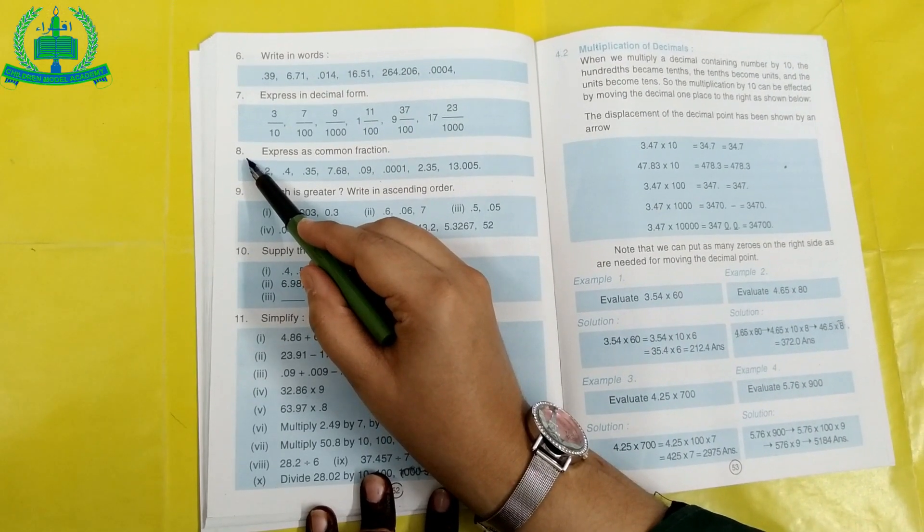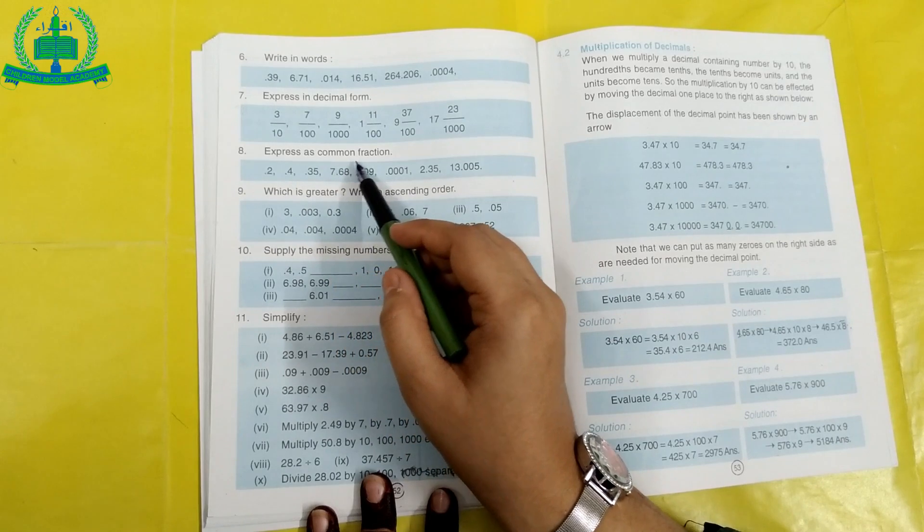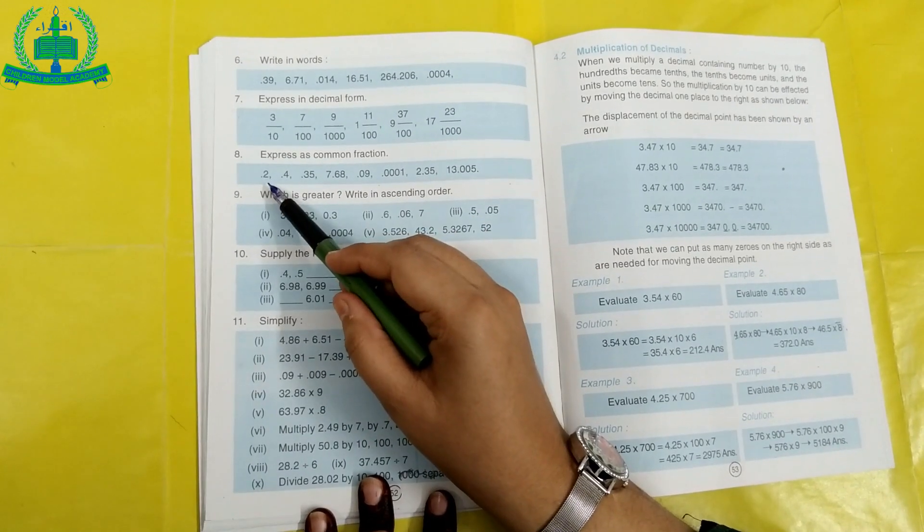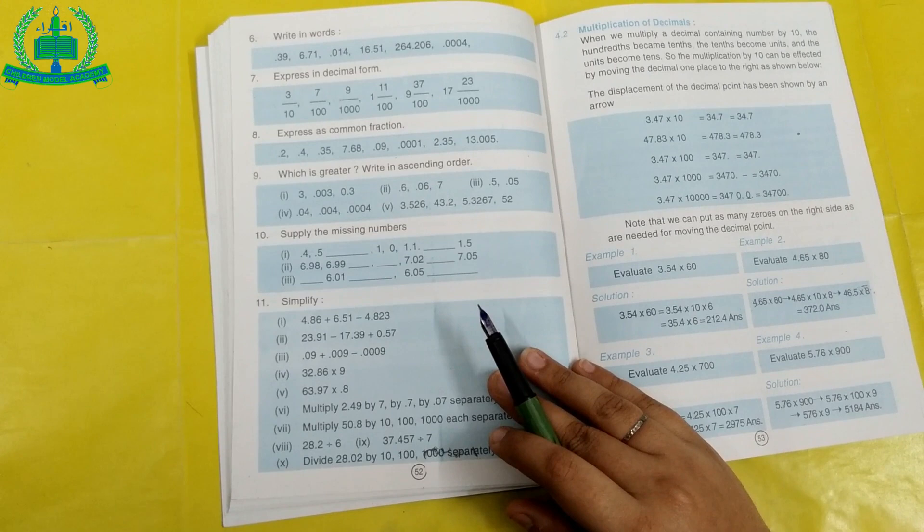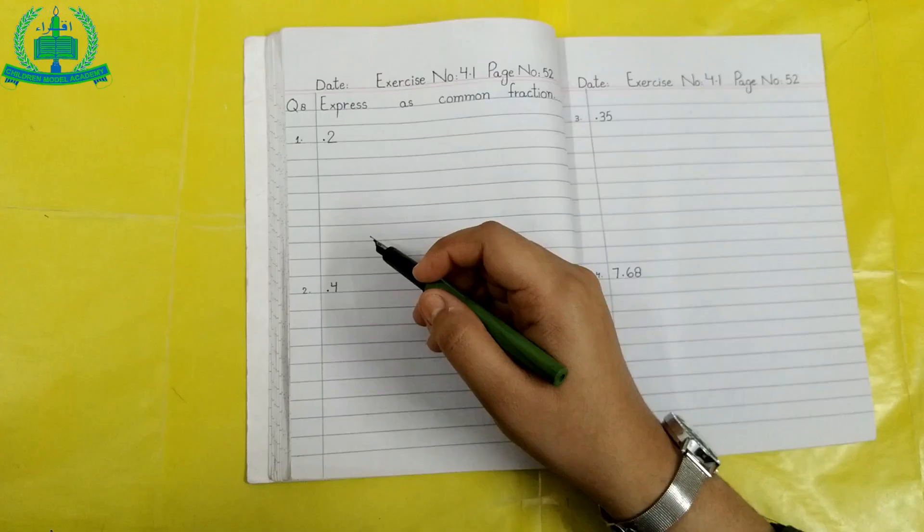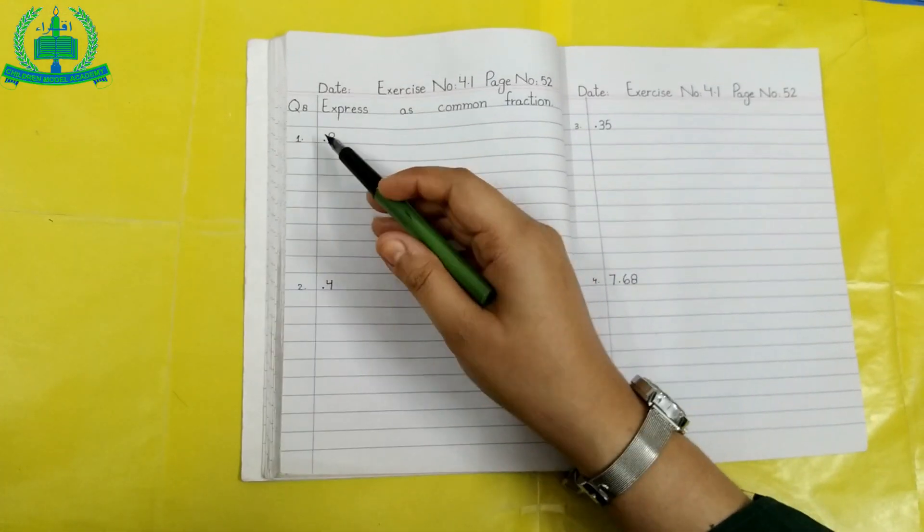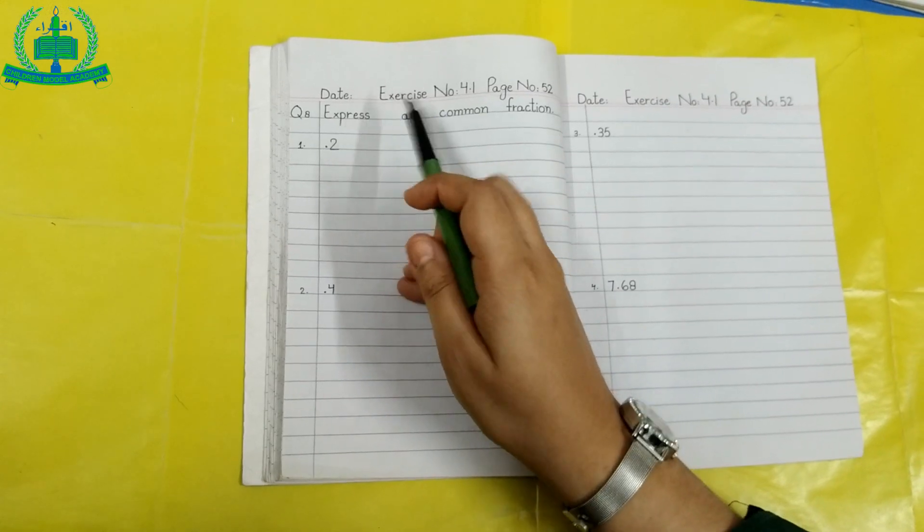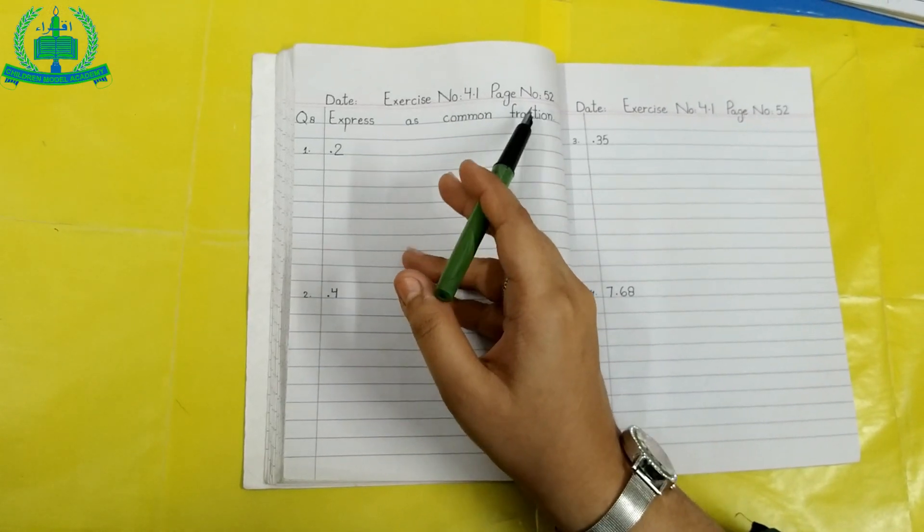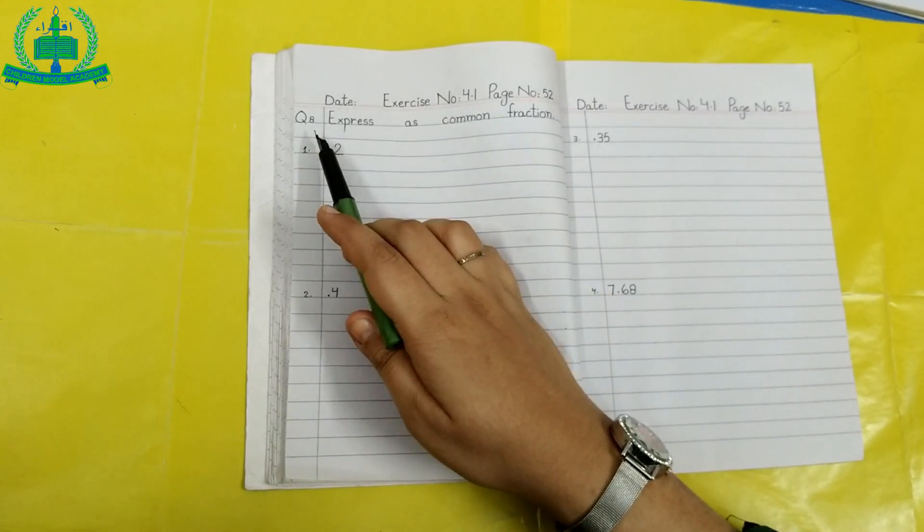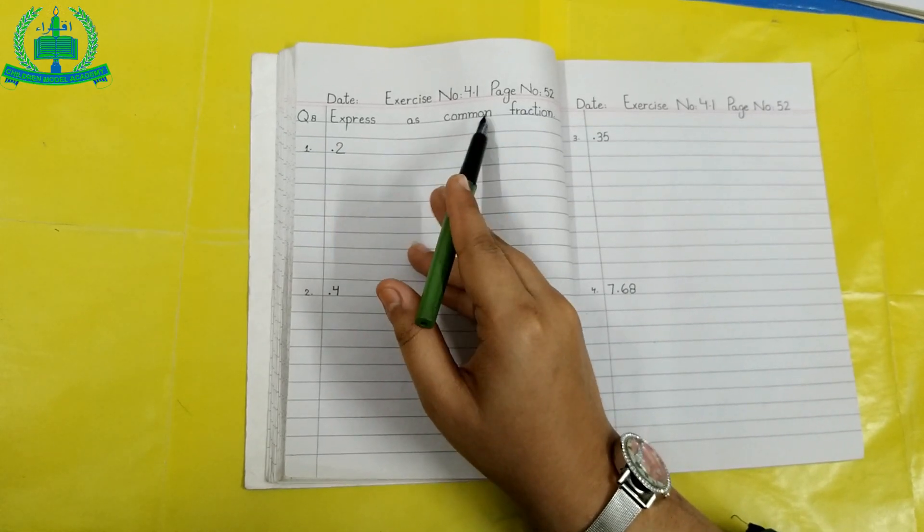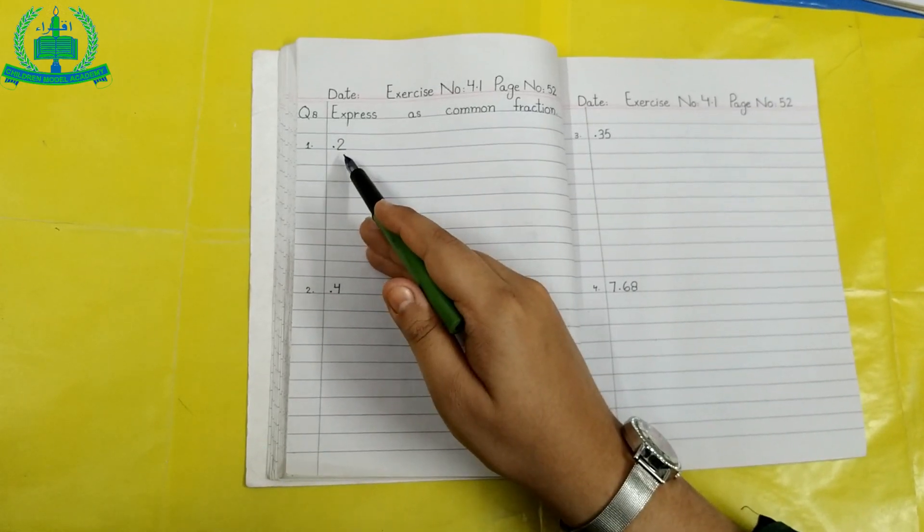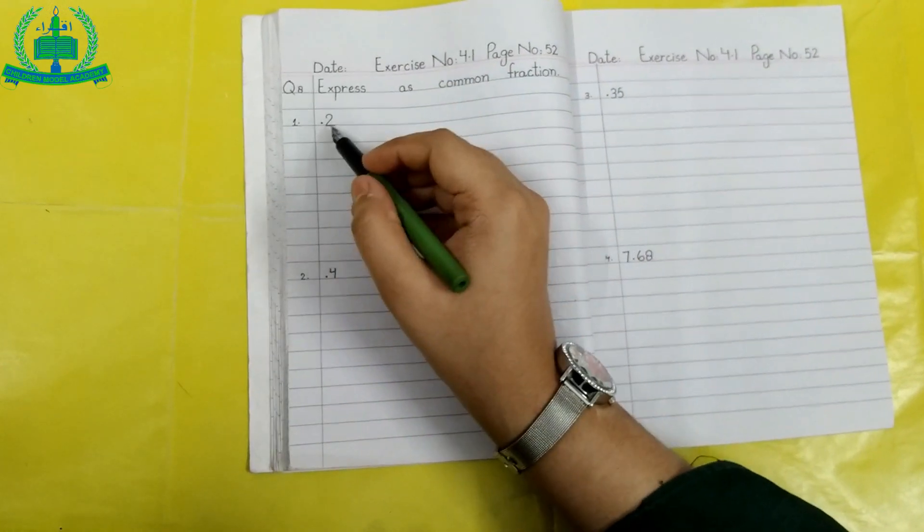Part number 8, express as common fraction, question number 1.2. Now open your math sewa copy, draw margin line, mention date, exercise number 4.1, page number 52, part number 8, express as common fraction, question number 1.2, give heading or solve.